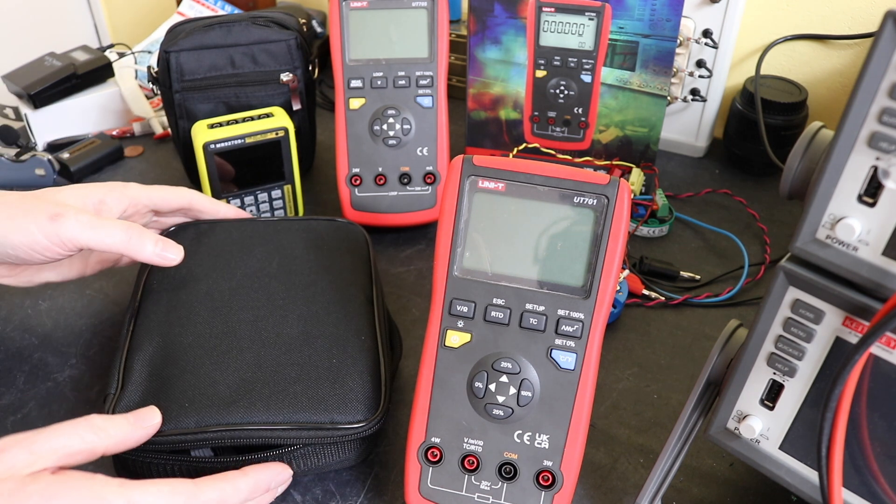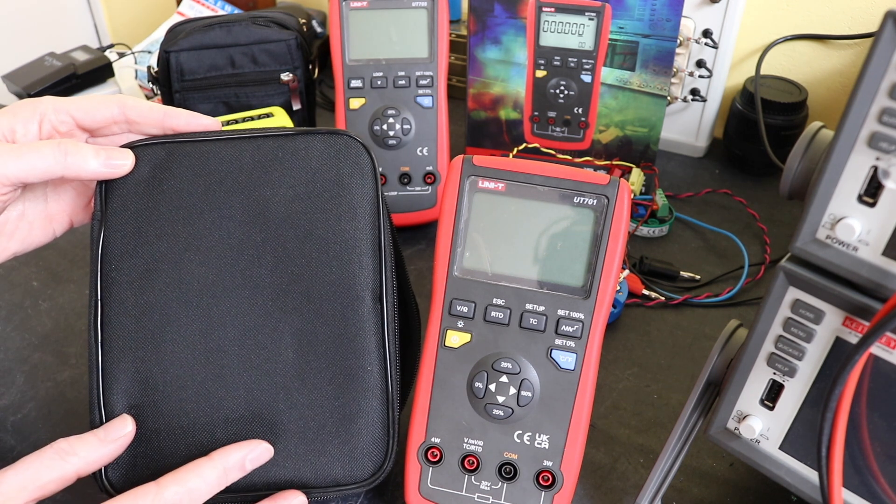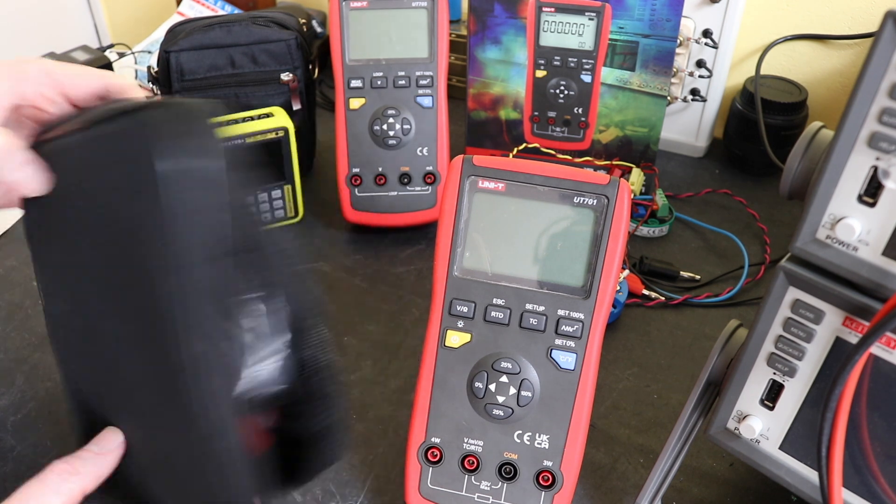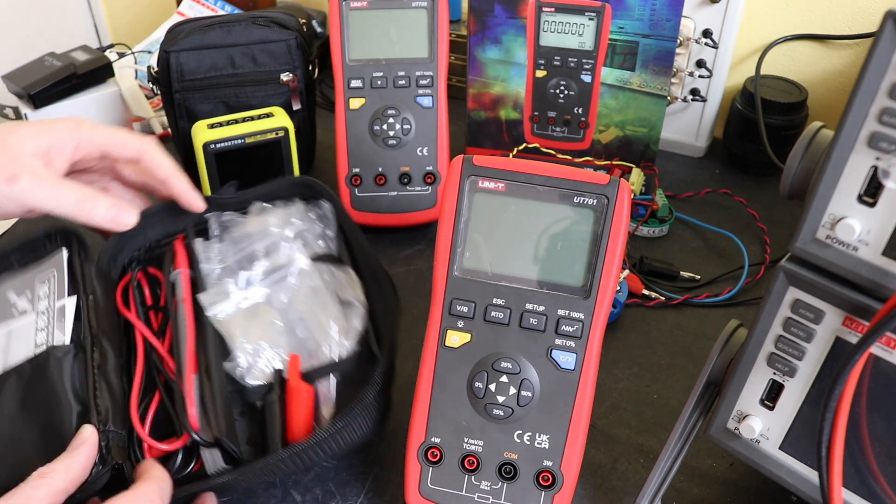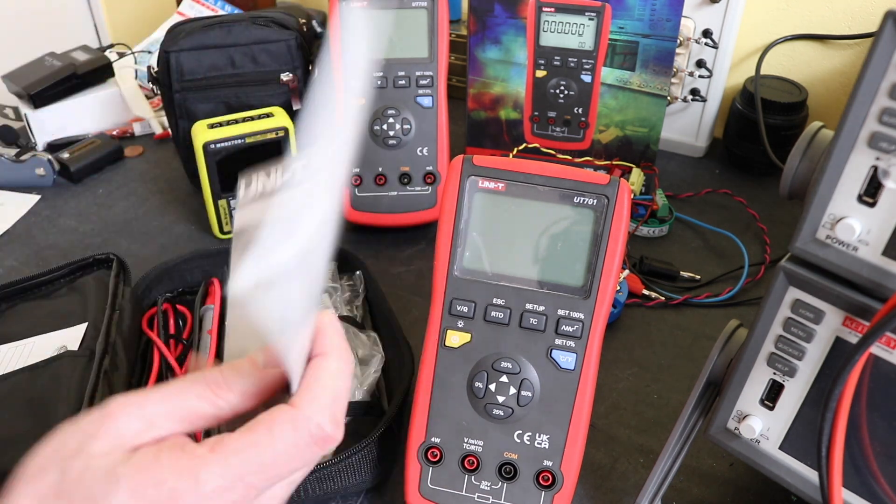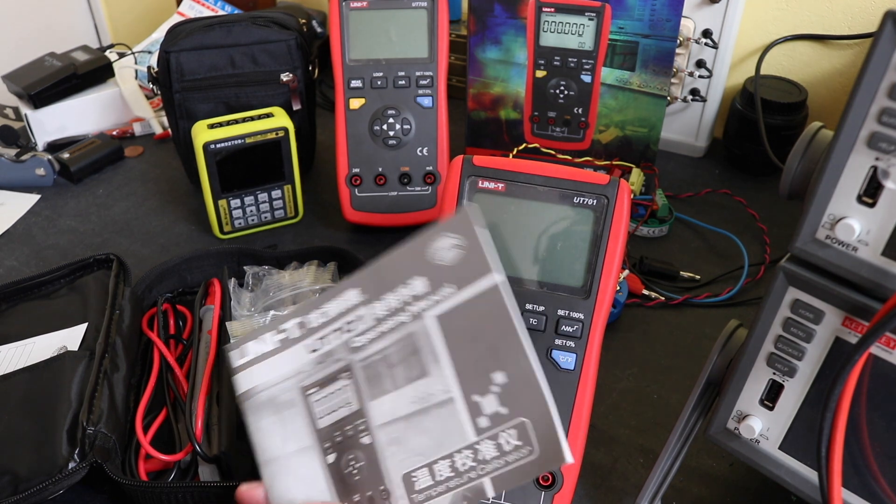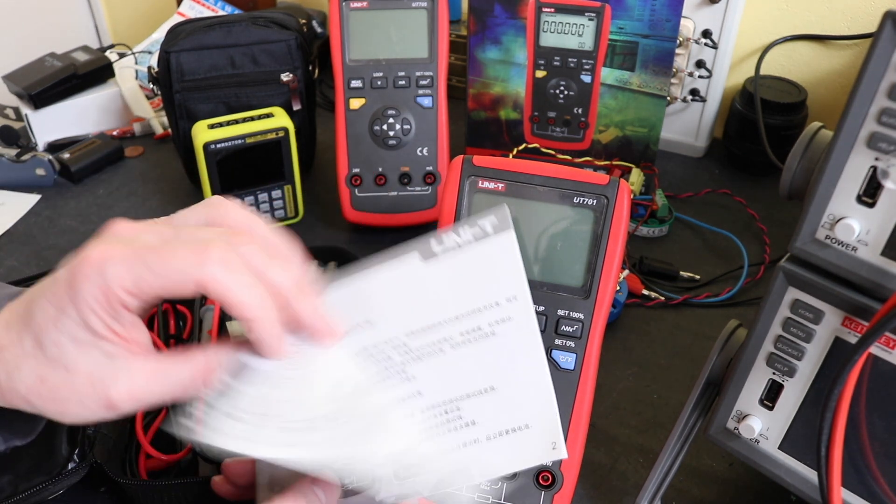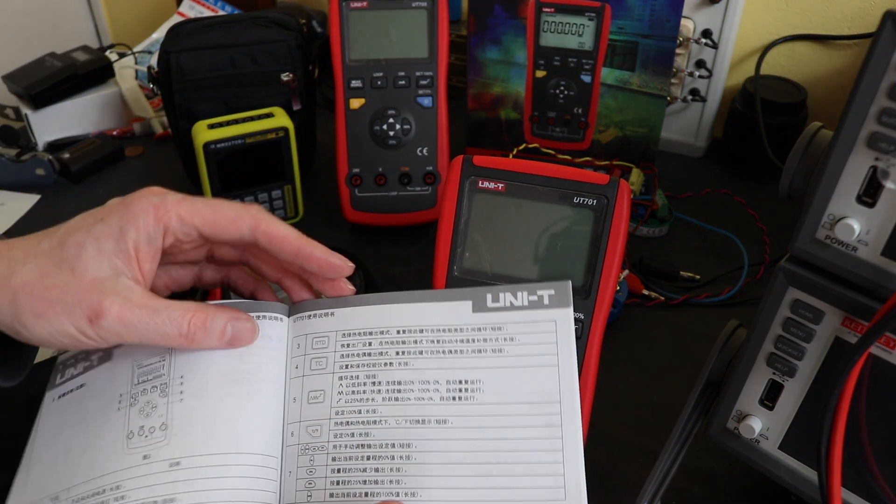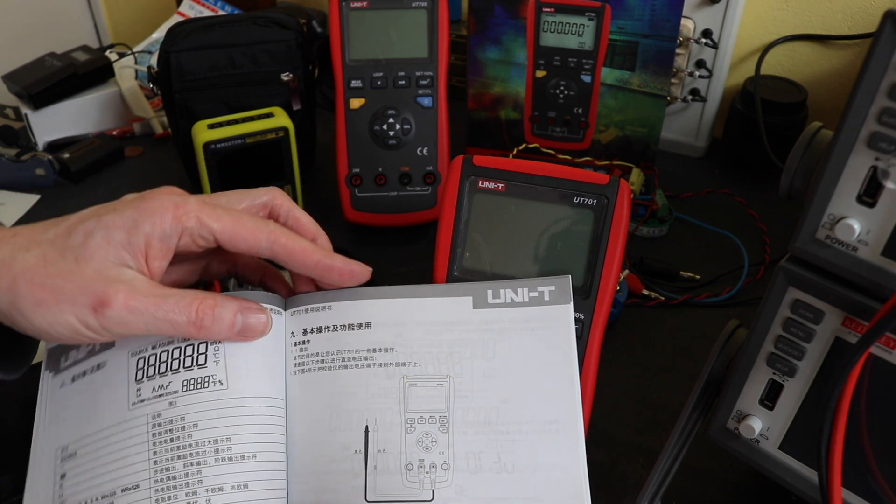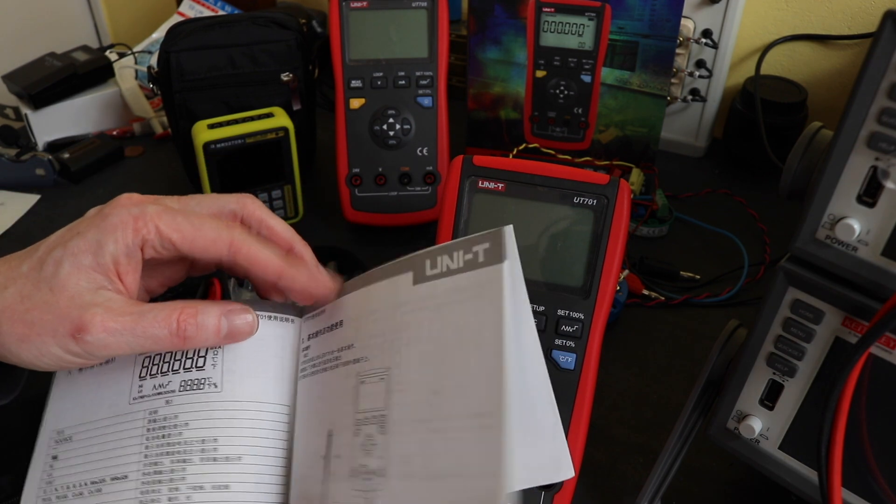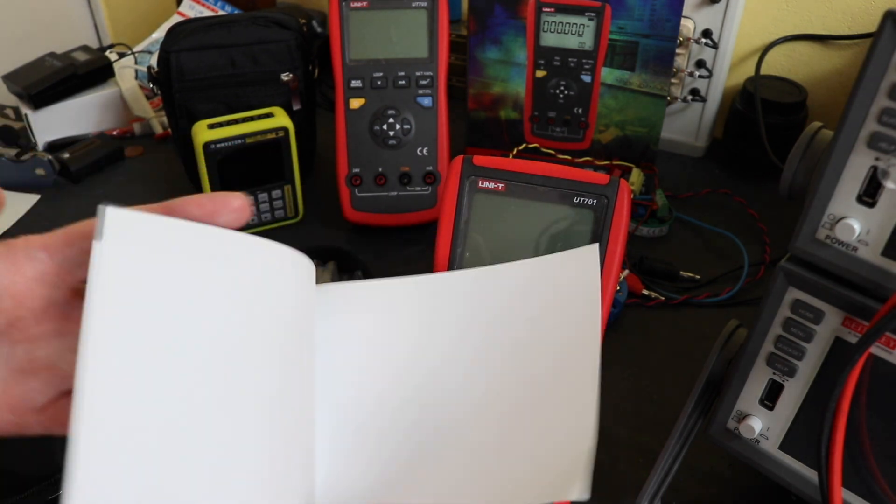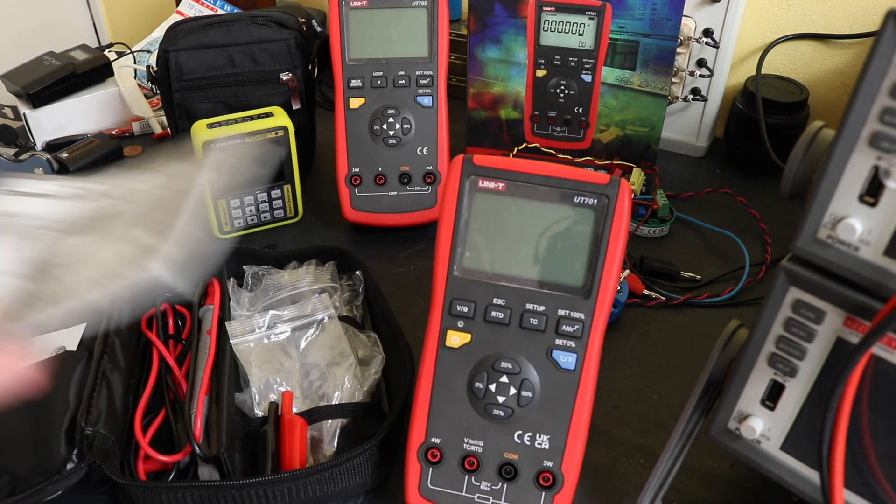You then get inside the box the actual pouch here that comes with unbranded just a basic little pouch. Inside we have the instruction manual because of the route that I wanted to buy this through. This is in Chinese. You can however download an English manual from the Unity website but you don't get a paper copy in the box.